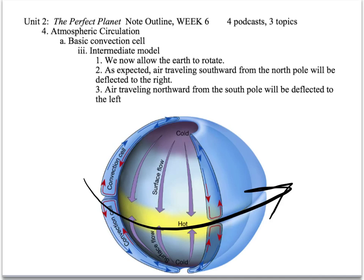We're going to notice that it's going to look like air traveling southward from the North Pole will deflect to the right, and air traveling northward from the South Pole will deflect to the left.